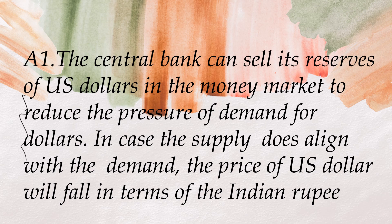The central bank will sell its reserves of US dollars in the money market, so that the pressure of demand for dollars in the market gets reduced. When the central bank sells its US dollars, the supply of dollars in the market increases. When supply becomes almost equal to demand, the price of the US dollar will fall in terms of the Indian rupee. This is what the central bank will do to correct this situation.